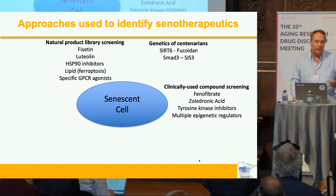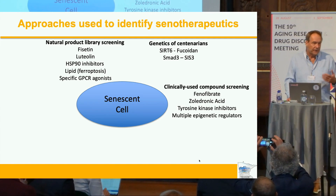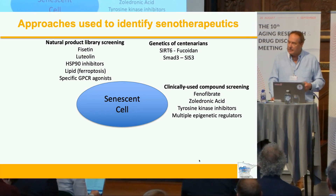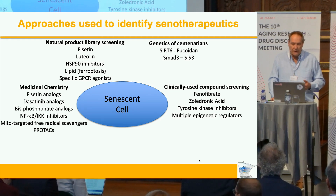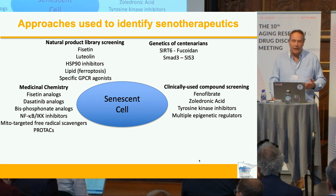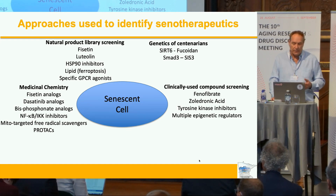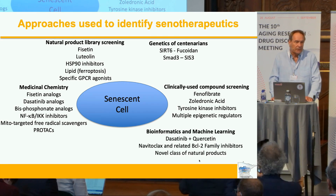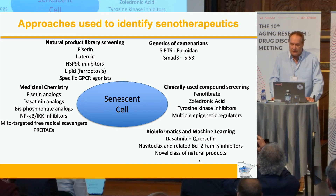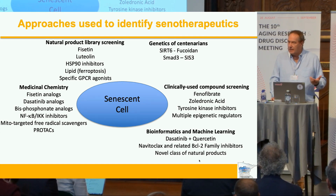We also screened FDA or clinically used compounds. We've identified fenofibrate and zoledronic acid, the bisphosphonate used for osteoporosis, as having senolytic activity. These obviously are in patients around the world. We've also done medicinal chemistry to improve the activity of our senolytics — in particular, we've made analogs of fisetin that are now tenfold more potent. We're making dasatinib analogs, bisphosphonate analogs, et cetera. We're also using bioinformatics — with Jim Kirkland and Tamar Tchkonia — to identify dasatinib and quercetin, a widely used combination to clear senescent cells, and also navitoclax and other BCL2 family member inhibitors.